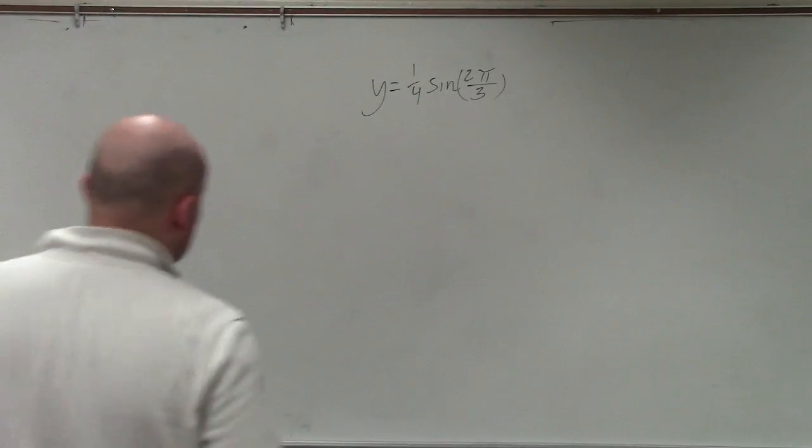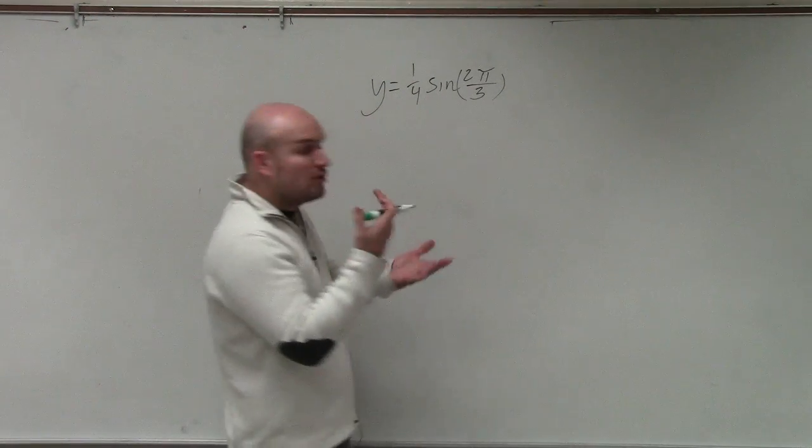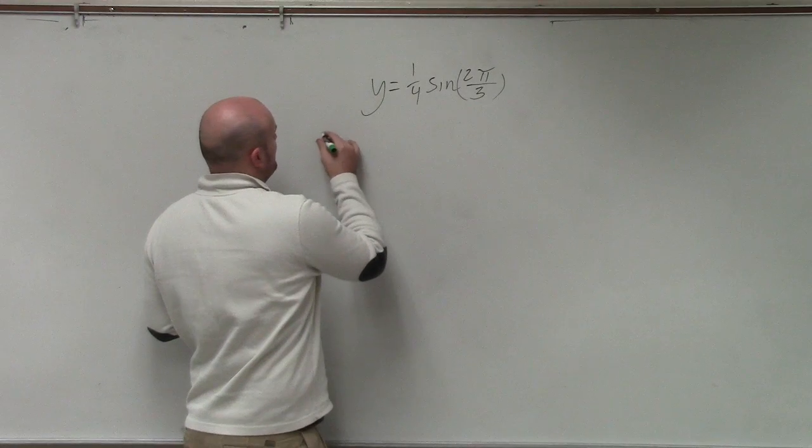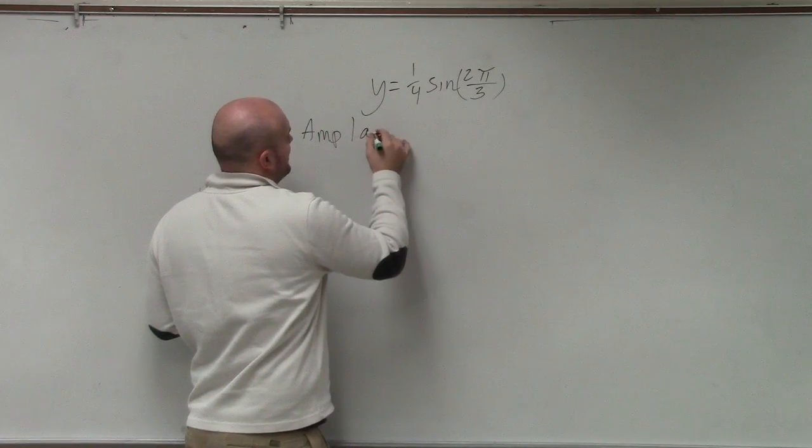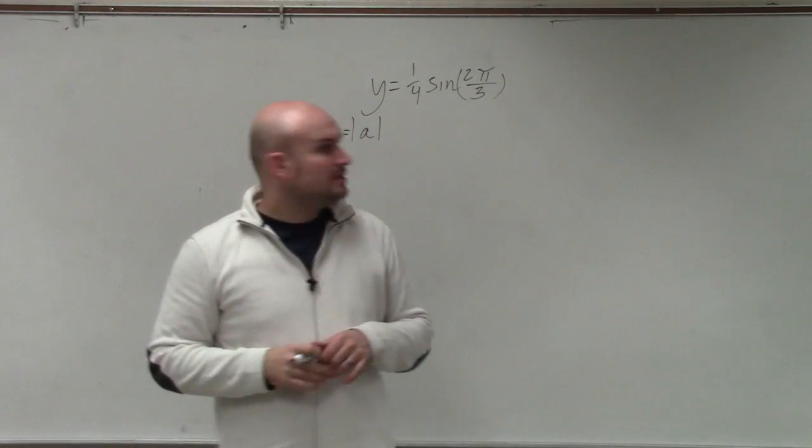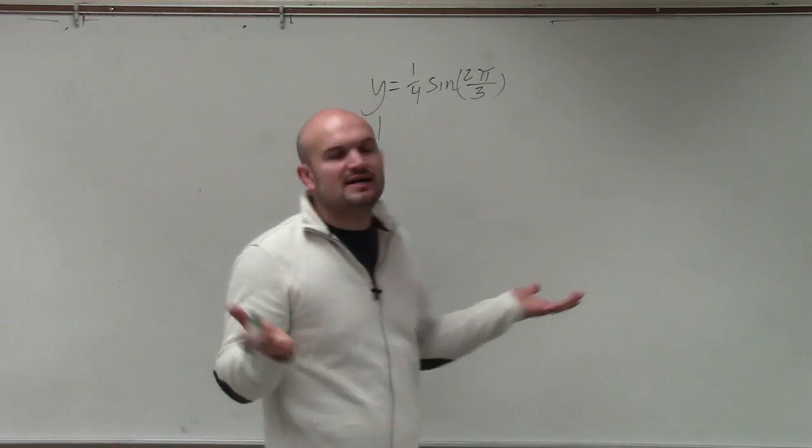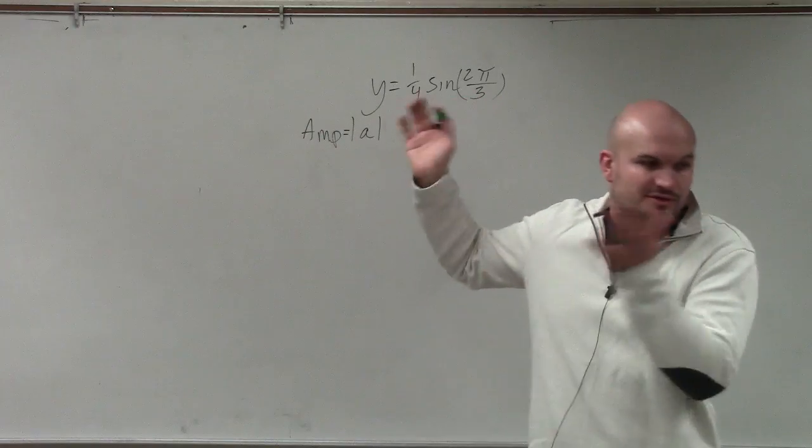So to find the amplitude and period of a sine or cosine equation or function, the amplitude is simply just the absolute value of a. OK? It is cosine? Well, cosine and sine are going to be exactly the same. So we'll do this one as sine.